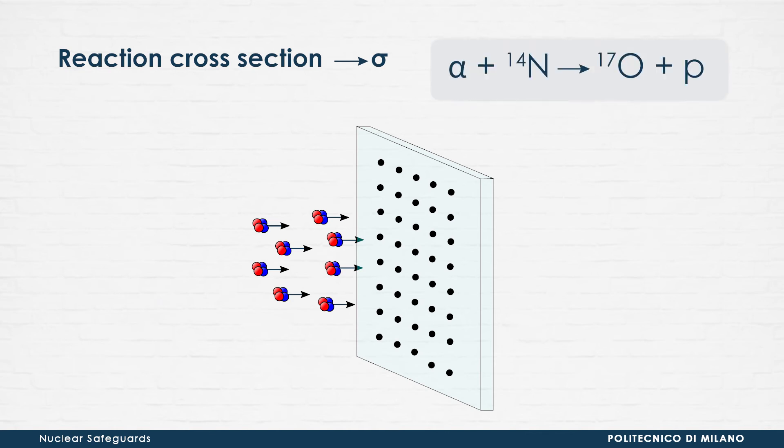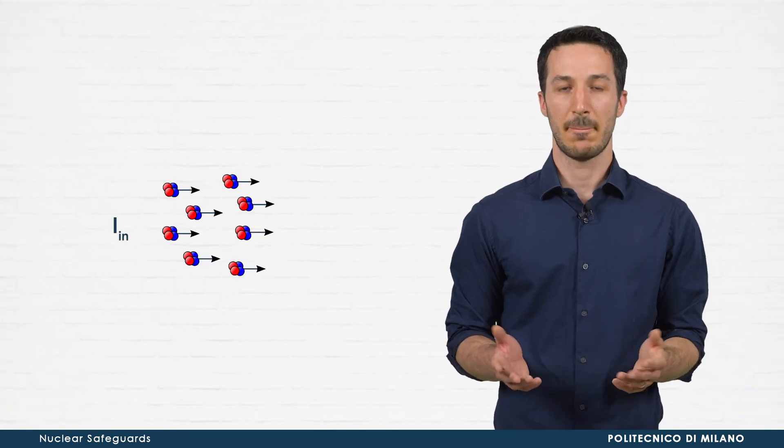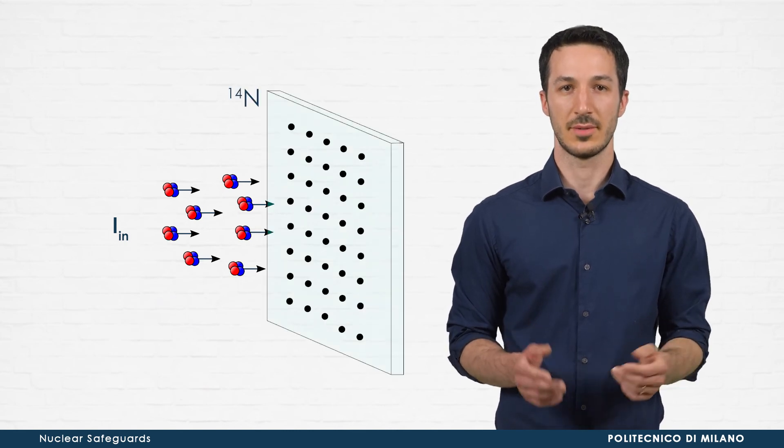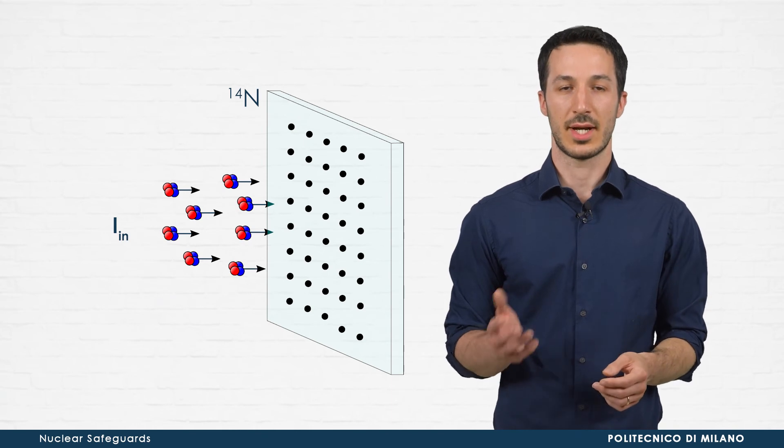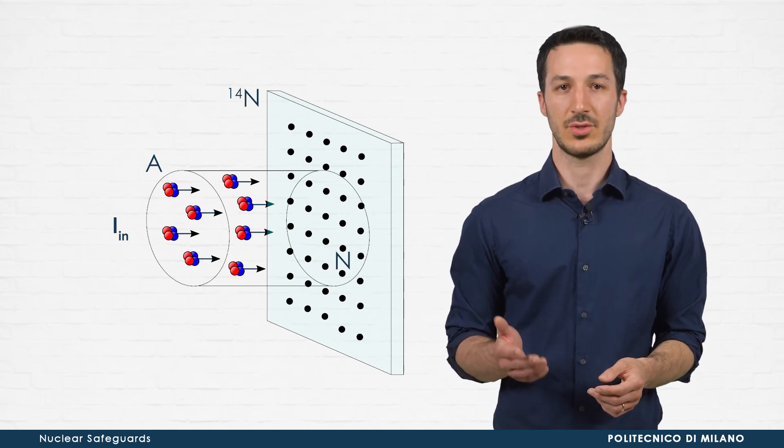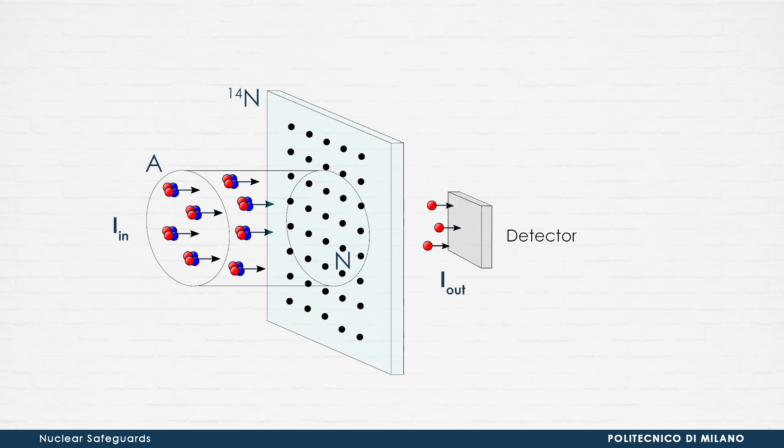For example, let us consider this reaction. An alpha particle impinges on a nitrogen-14 nucleus and produces a proton and an oxygen-17 nucleus. To measure the cross-section, we can perform a typical nuclear physics experiment, based on a projectile, a target and a detector. An alpha particle beam with known kinetic energy and current is delivered to a nitrogen-14 target. The incoming beam is characterized by a section A. In this area, there will be N target nuclei of nitrogen-14. Beyond the target, the particle detector measures the proton current generated by the reaction.